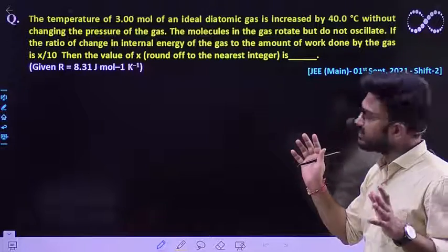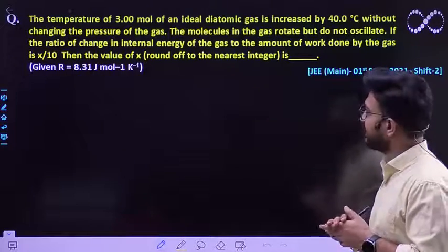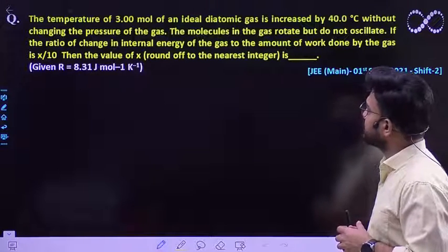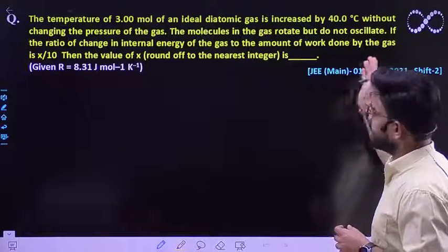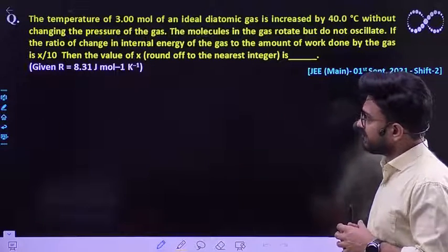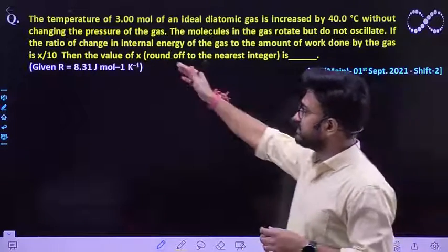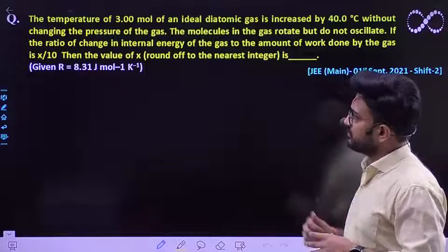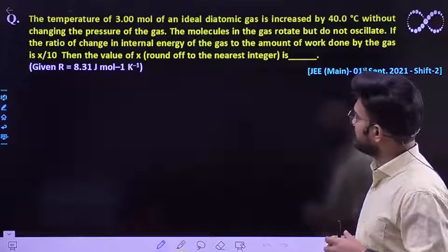So oscillation part of the diatomic gas we have to neglect. If the ratio of the change in internal energy of the gas to the amount of work done by the gas is given by x by 10. So that means you have been given the ratio of change in internal energy to the work done by the gas which is x by 10. So then the value, what is the value of x?